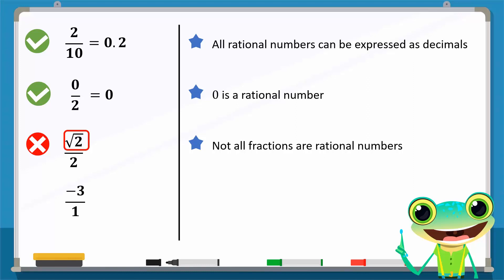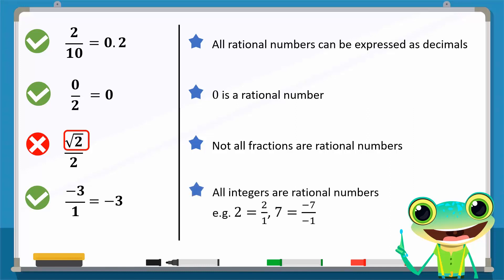-3/1 is a rational number because -3 and 1 are both integers. We can also write -3/1 as -3. Since -3 can be expressed as a rational number, we can say that all integers are rational numbers. For instance, 2 can be written as 2/1, 7 as -7/-1, and so on.